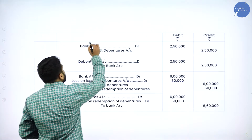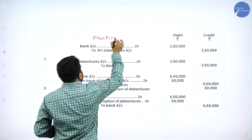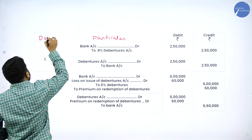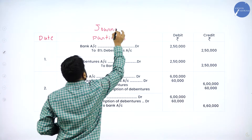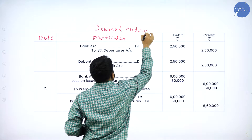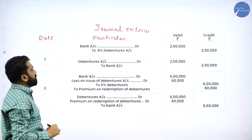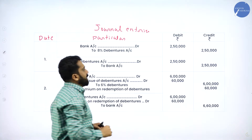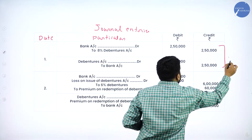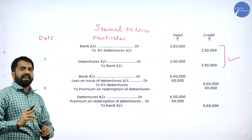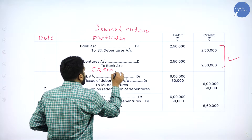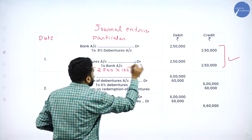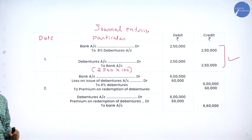Before writing the answer, you have to mention the date or serial number, and the heading must be 'Journal Entries.' For the first statement, the calculation is 2,500 multiplied with 100, giving a value of 2 lakh 50,000. This first statement is done.